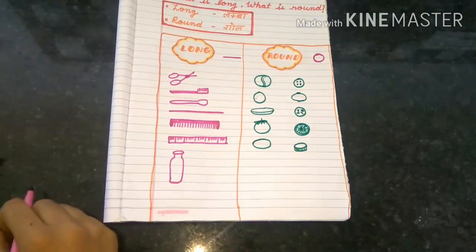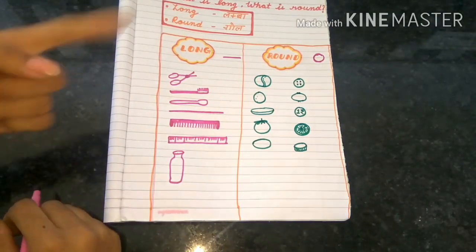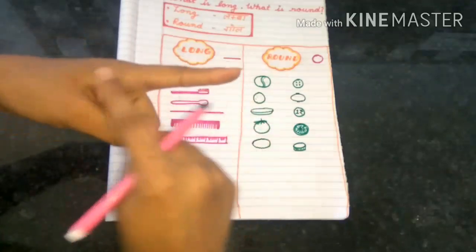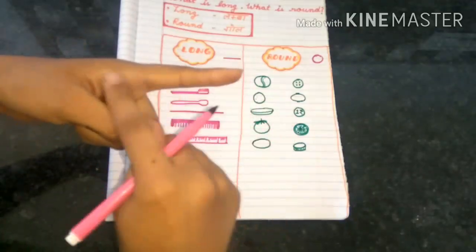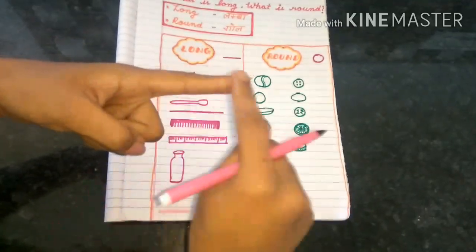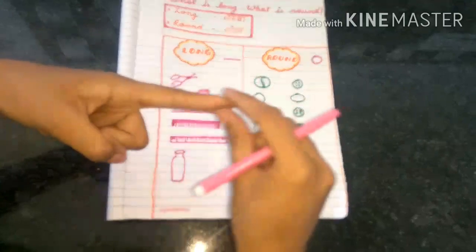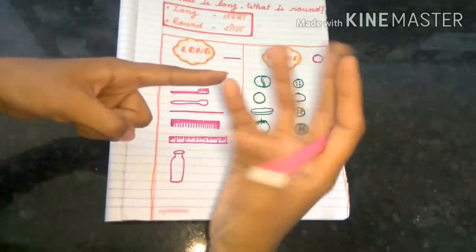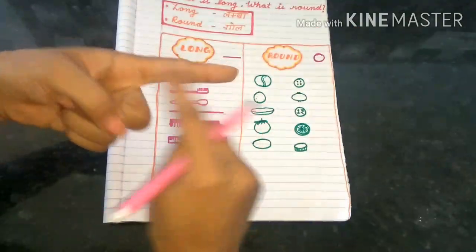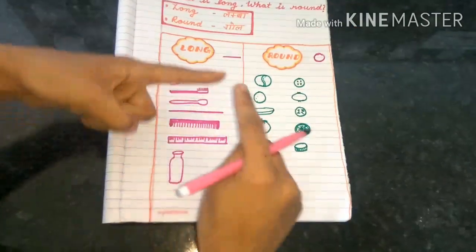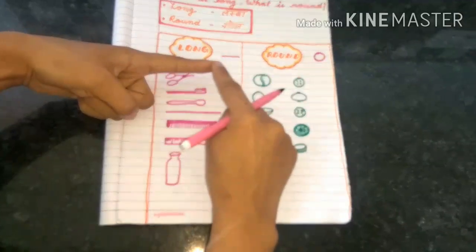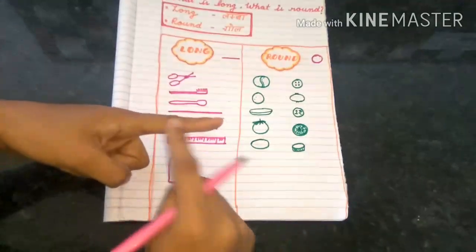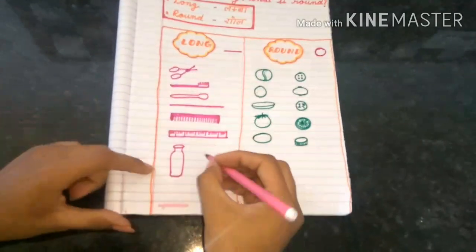Our next example is this finger. How is it? Is it looking long or like this — round? Yes, this is long. So let's draw this finger here.